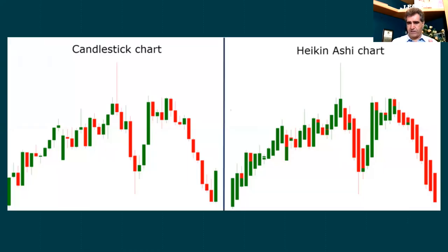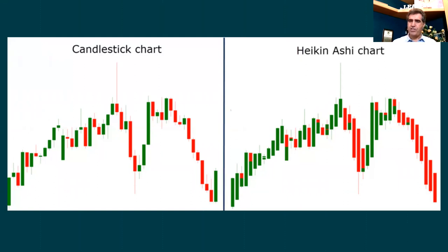I initially just want to show you the difference. As you can see on the left side, it's a candlestick chart — it has green bars and red bars, the selling and the buying. And as you can see with the Heikin-Ashi chart, it's much cleaner, especially if you want to see the change of trend and the strength of the trend. We will talk about this more.